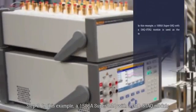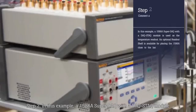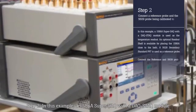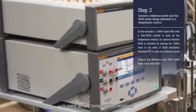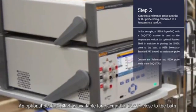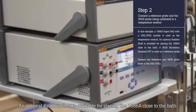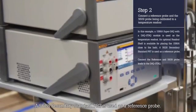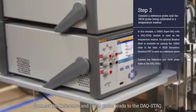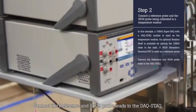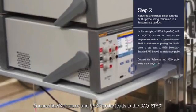Step 2: In this example, a 1586 Super DAC with a DAC-Stack module is used as the temperature readout. An optional readout shelf is available for placing the 1586 close to the bath. A 5628 secondary standard PRT is used as a reference probe. Connect the reference and 5609 probe leads to the DAC-Stack.